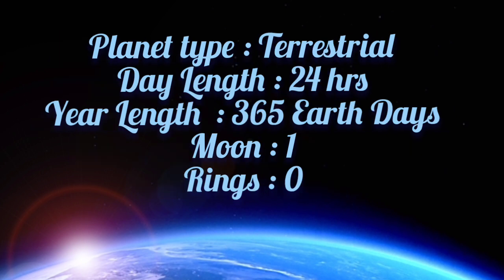Planet type is terrestrial. The day length of Earth is 24 hours. Year length is 365 Earth days.